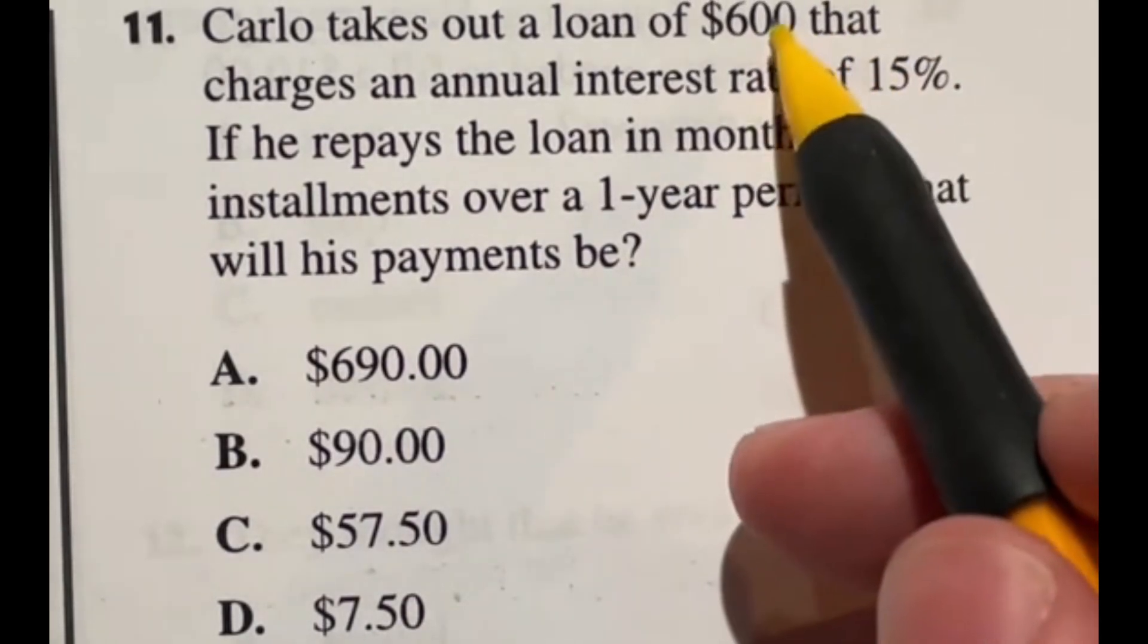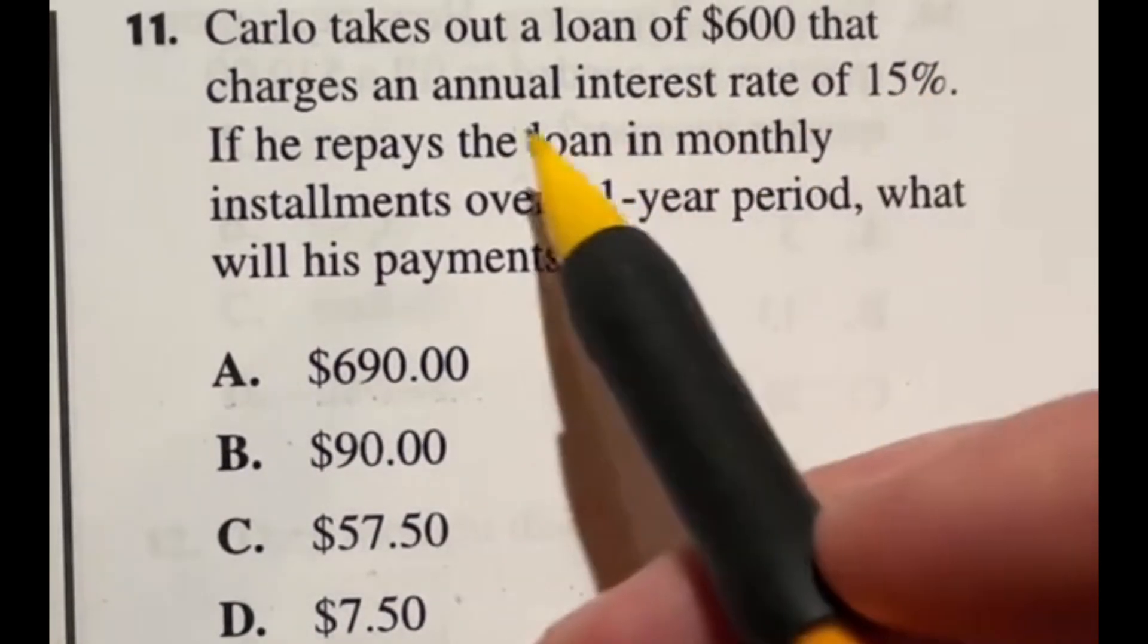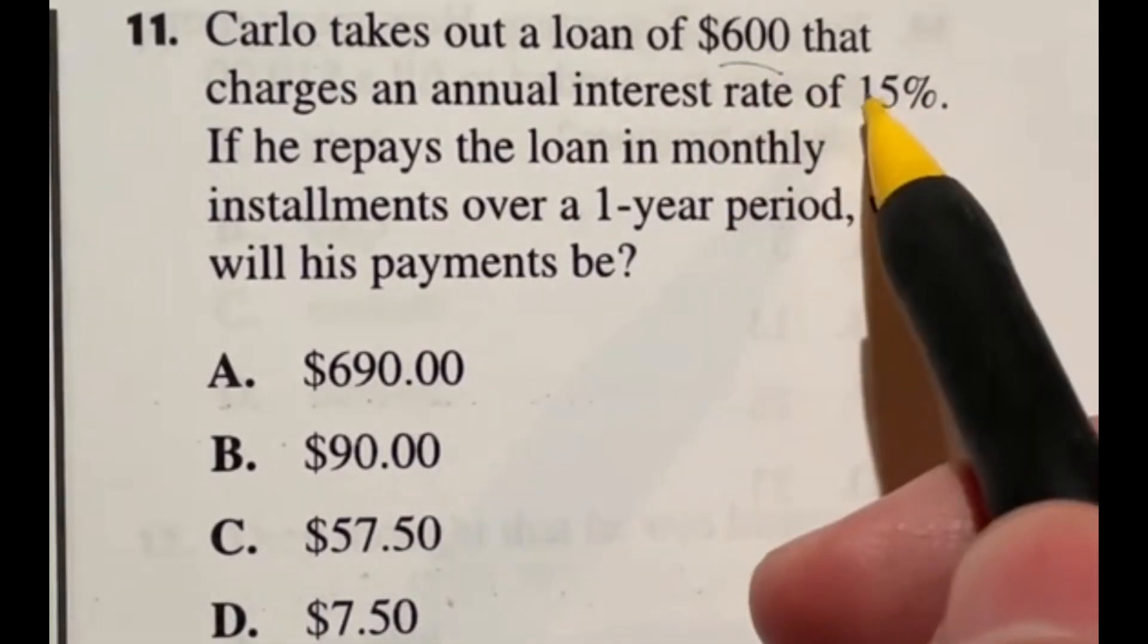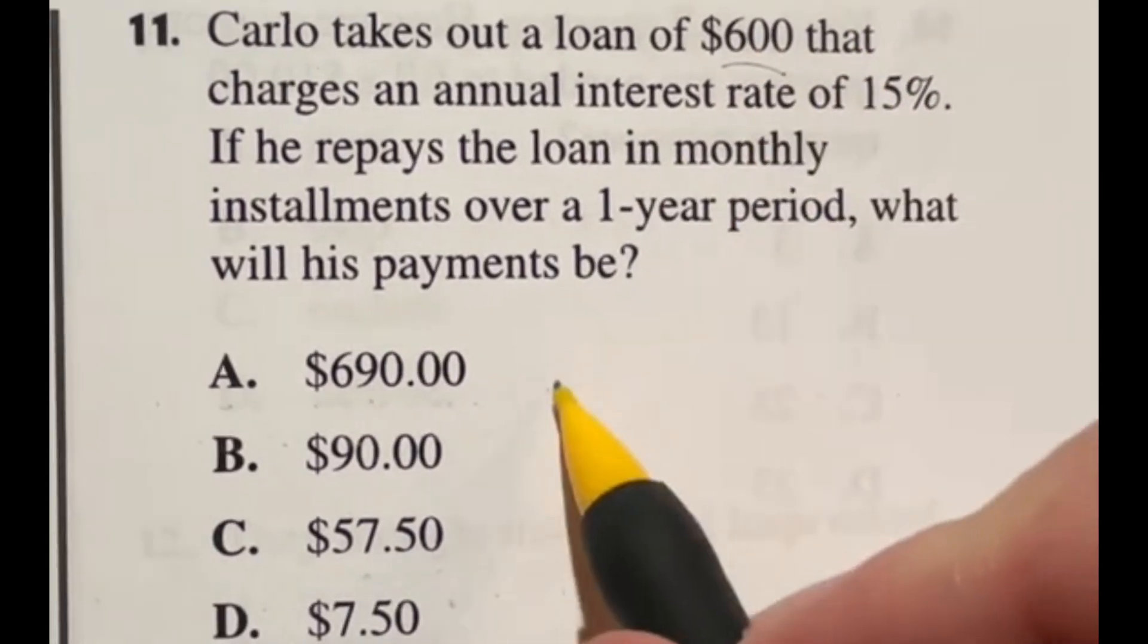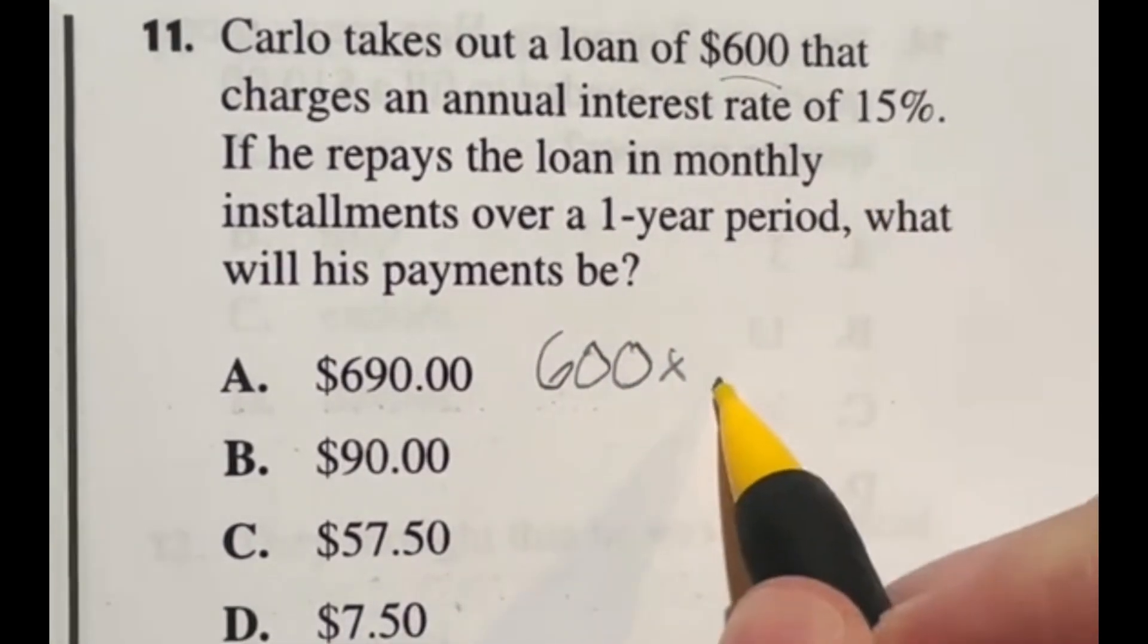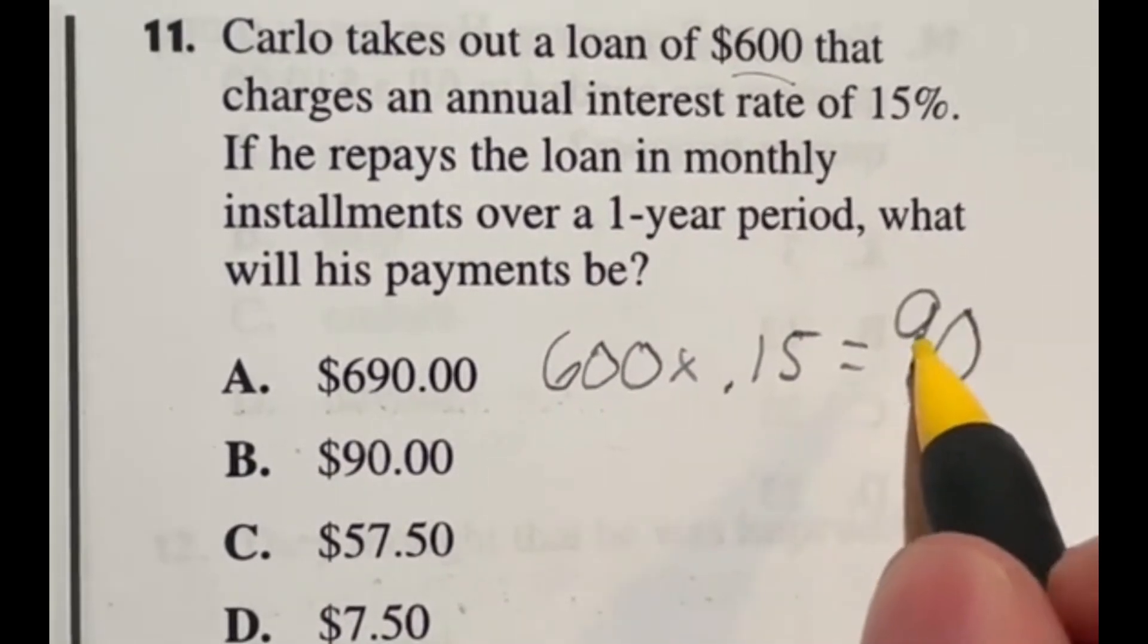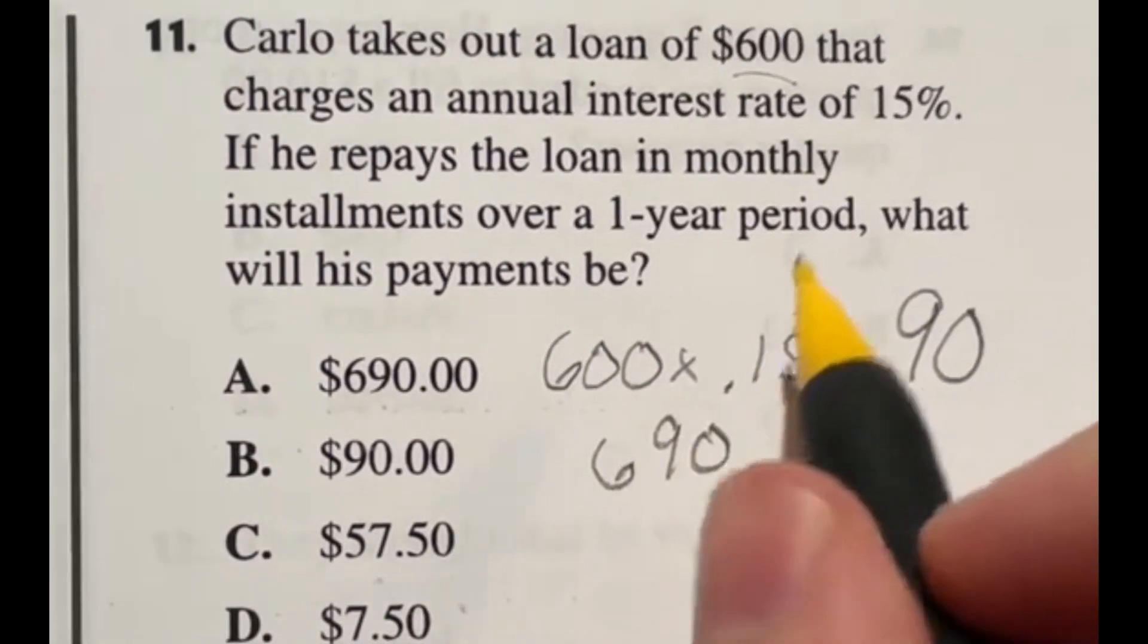So in this case we're looking at $600 and an annual interest rate of 15%. That means at the end of the year it's going to charge 15% of that loan. Usually that's going to come at the start so we're going to apply that right at the beginning. So what is 15% of $600? You would do $600 times 0.15 and when you multiply that through you're just multiplying the 6 by that which is going to give you $90. So that means we have an interest rate being added of $90.